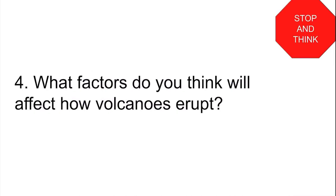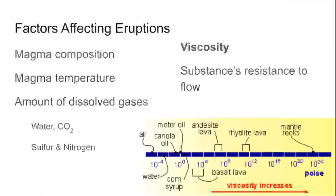Stop and think about the factors that will affect how volcanoes erupt. Pause the video and think on this question. There are three main factors: the composition of the magma, the temperature of the magma, and the amount of gases dissolved in it. There can be up to eight percent of the magma's total weight in dissolved gas, usually water and carbon dioxide, but also smaller amounts of gases containing sulfur and nitrogen.